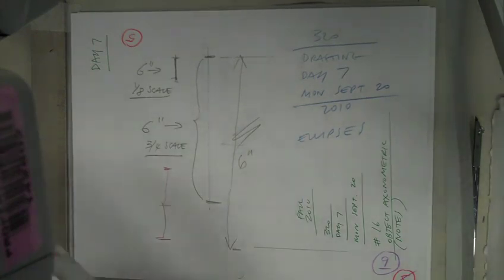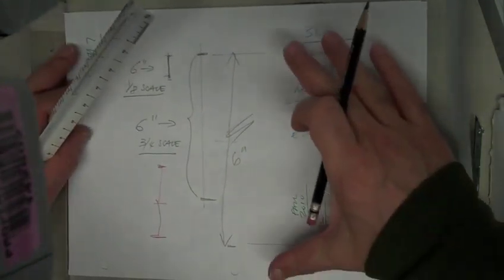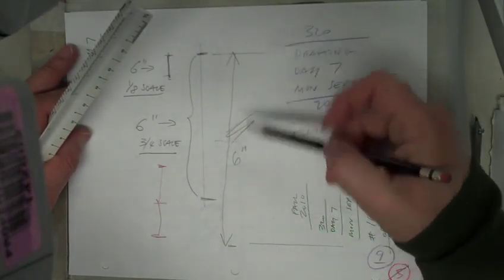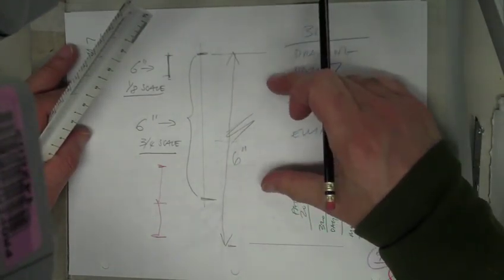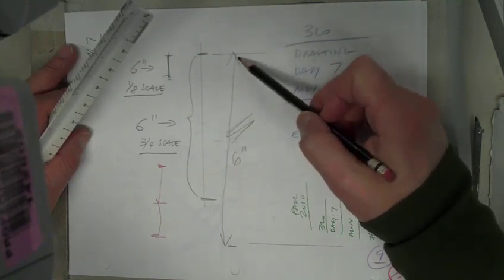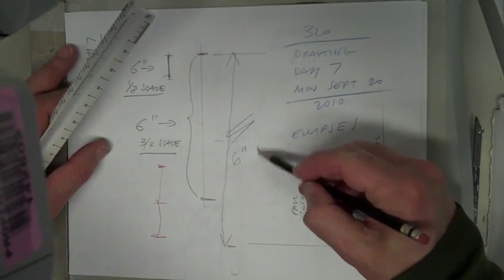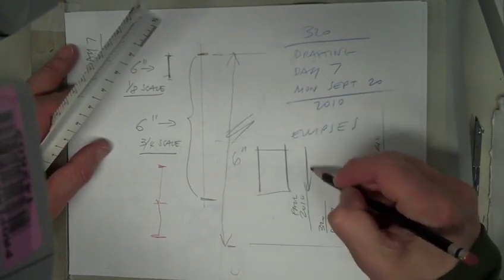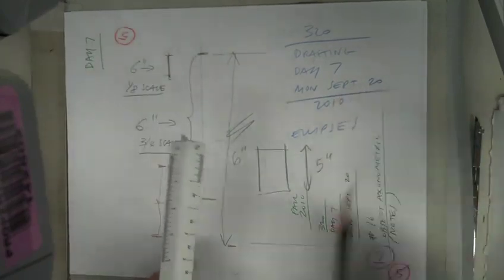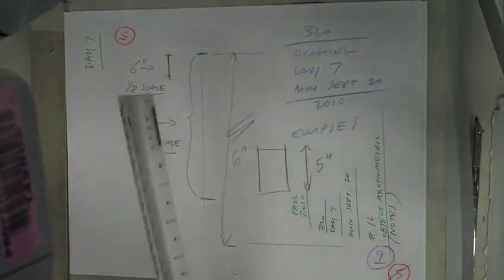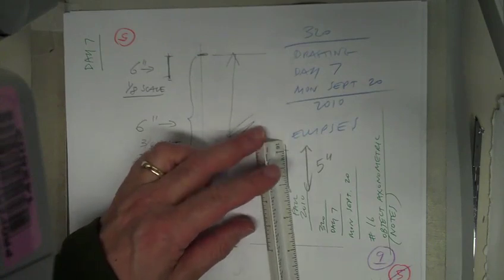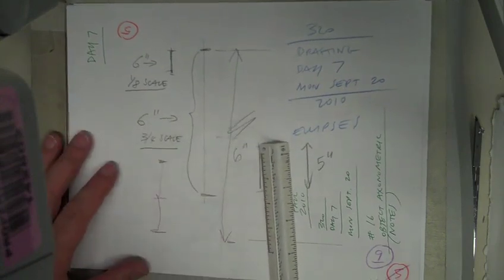Let's talk about scale. Your object will probably fit on your sheet, but maybe not, so you might need to reduce it. When you write your dimensions, still write the real dimensions. For example, if something is five inches in reality but drawn at an inch and a half, that makes it about 1:3 scale.